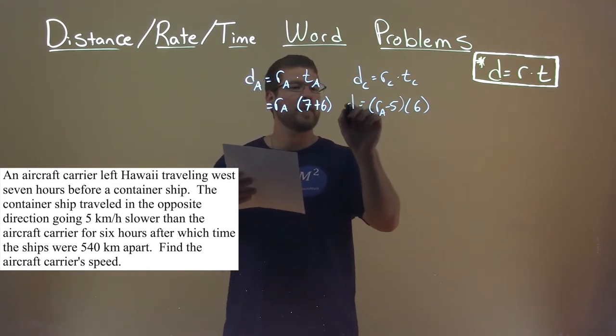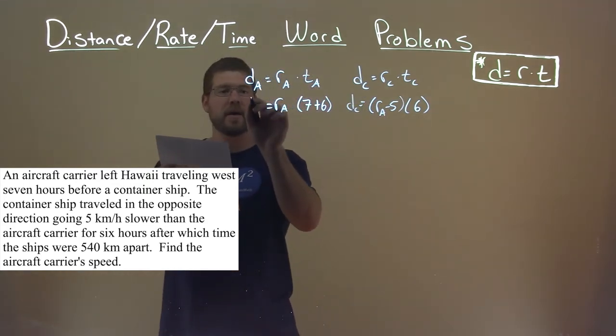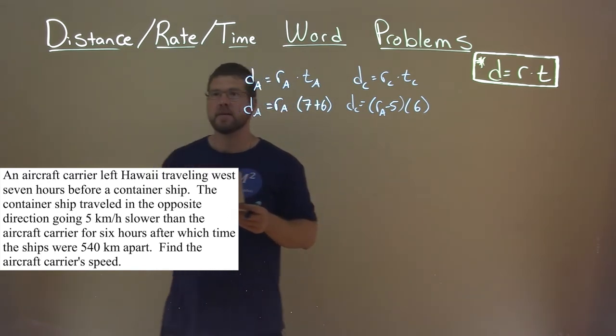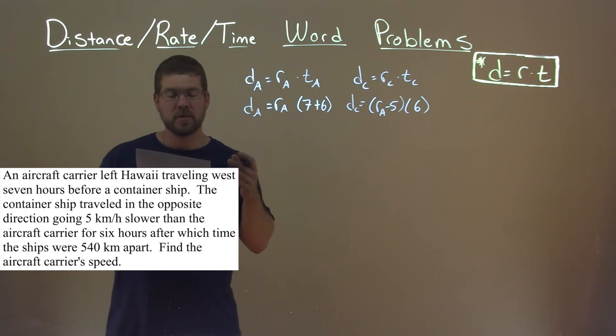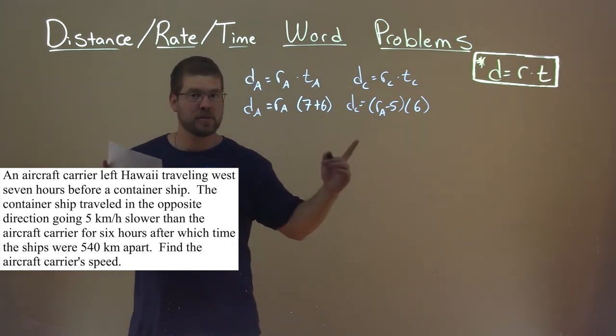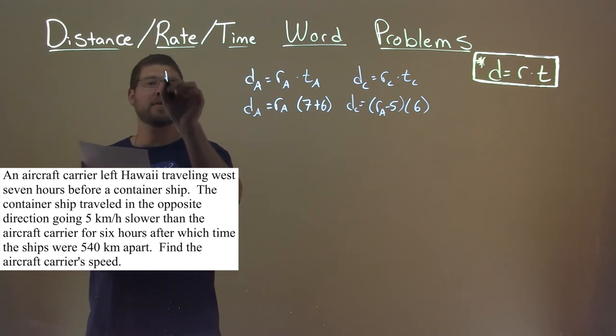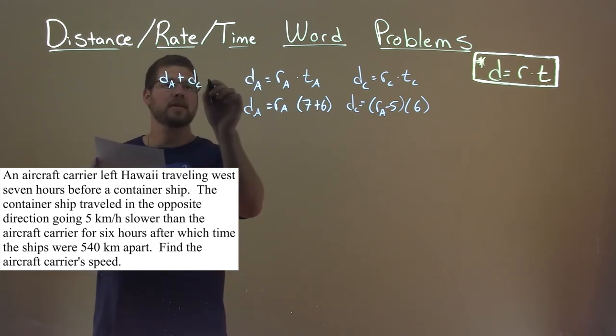And bring down D sub C and bring down D sub A. Now there's one more thing they tell us here. They said after all of this, the ships were 540 kilometers apart. Now remember, they're going in opposite directions. So that means if we add their distances, the distance of the aircraft carrier plus the distance of the container ship is equal to 540 miles.